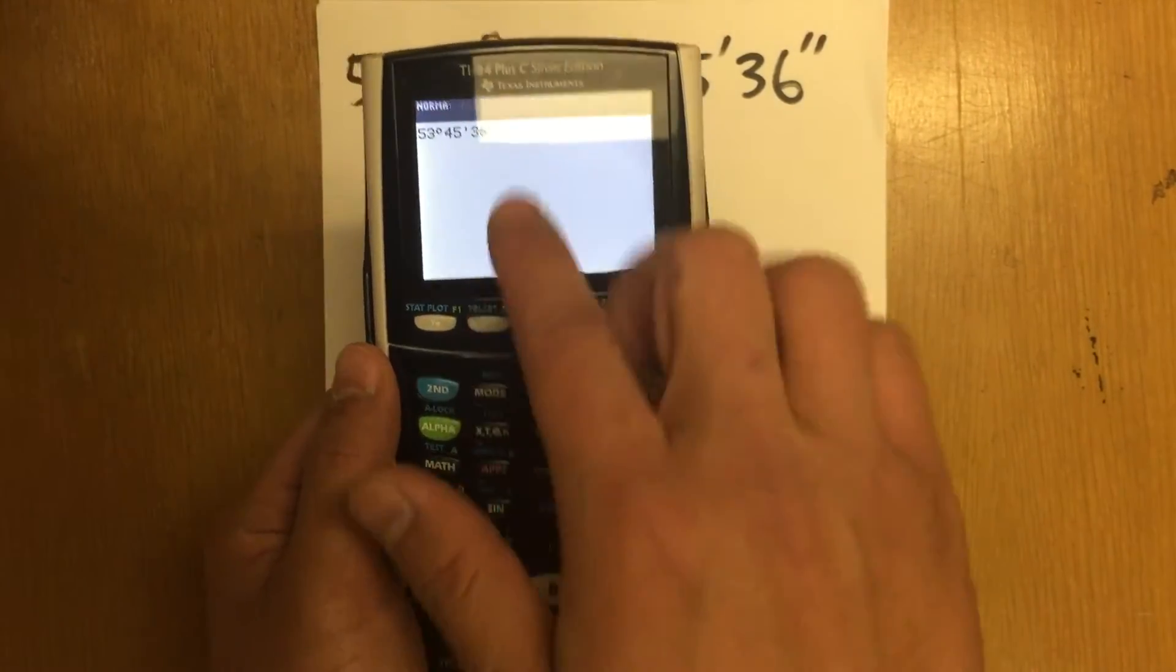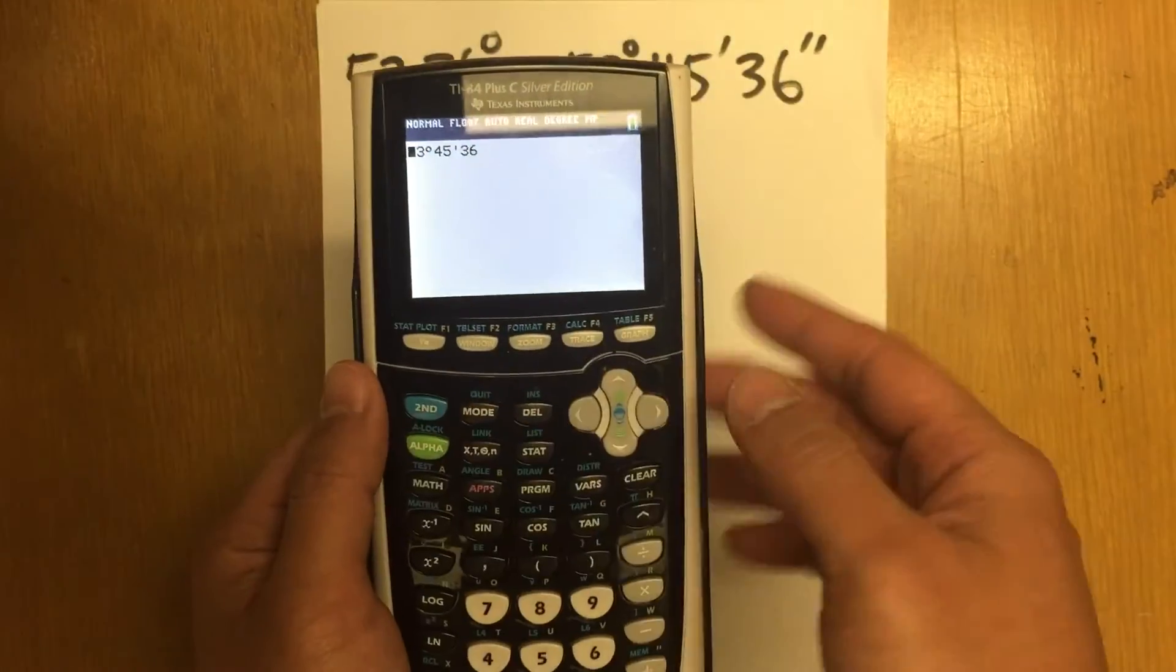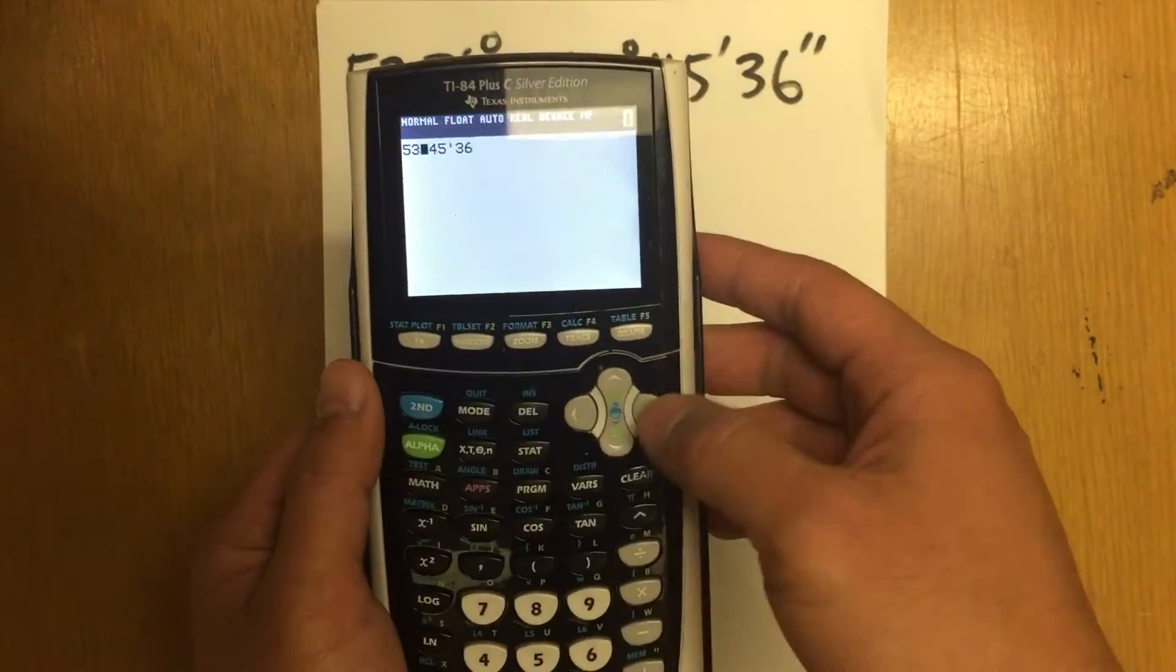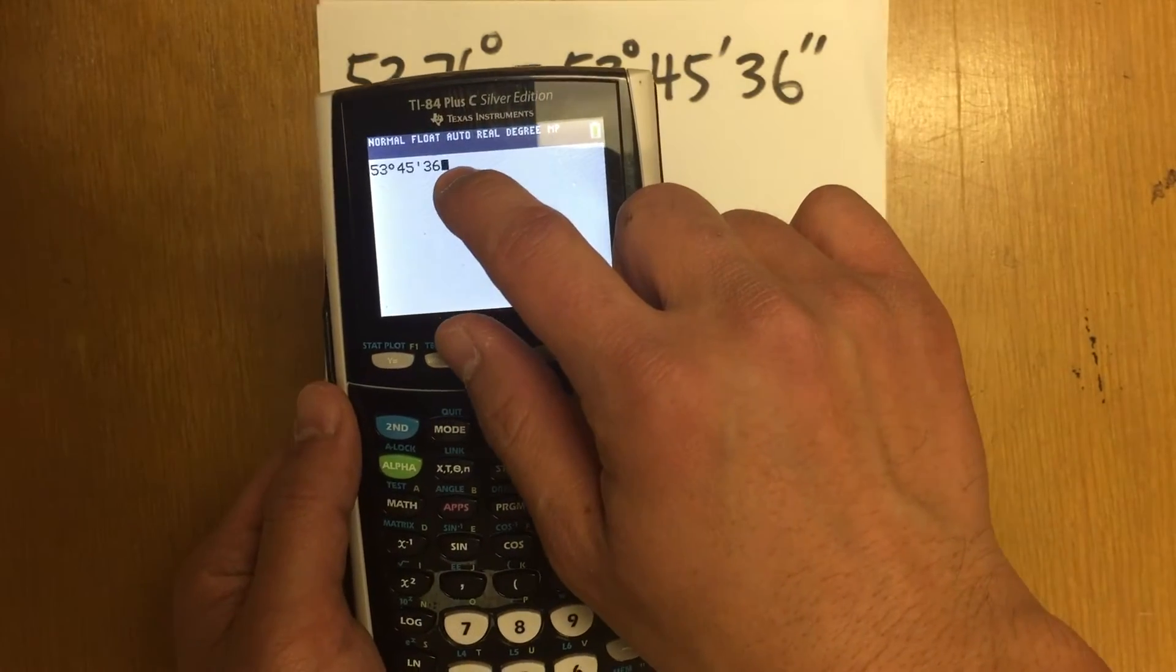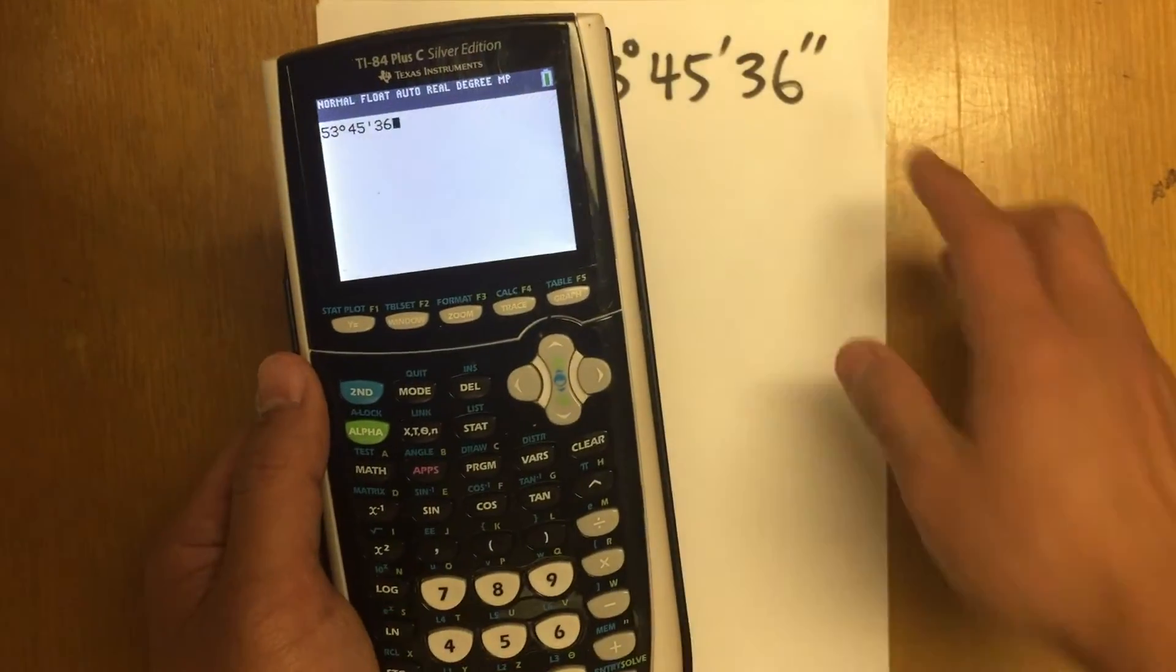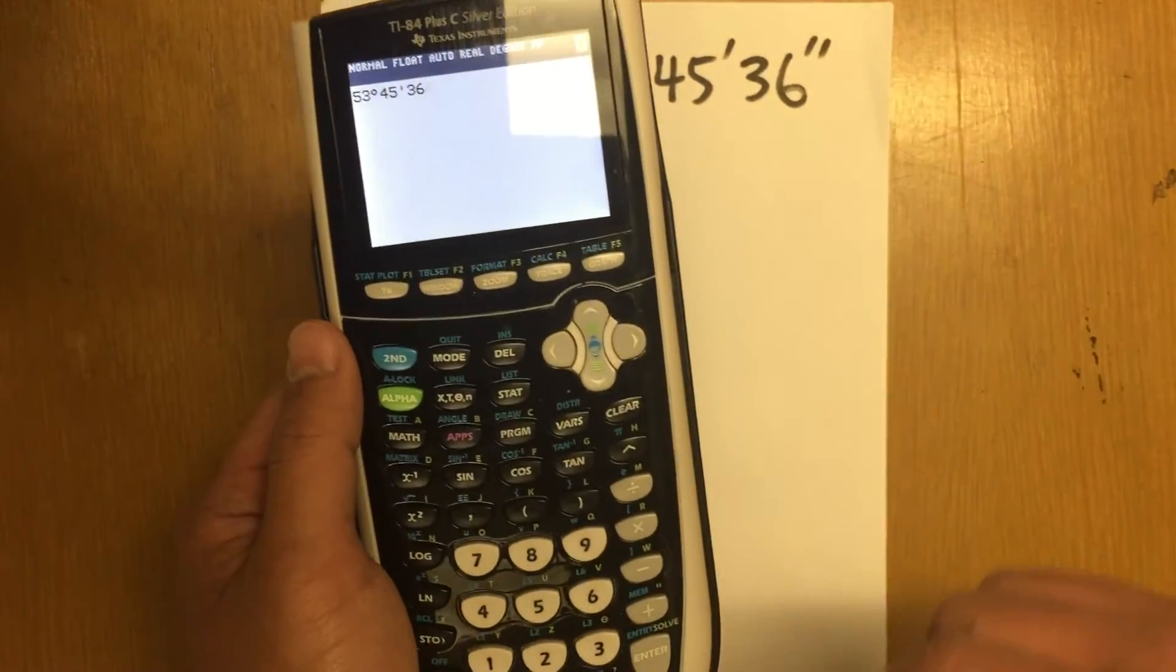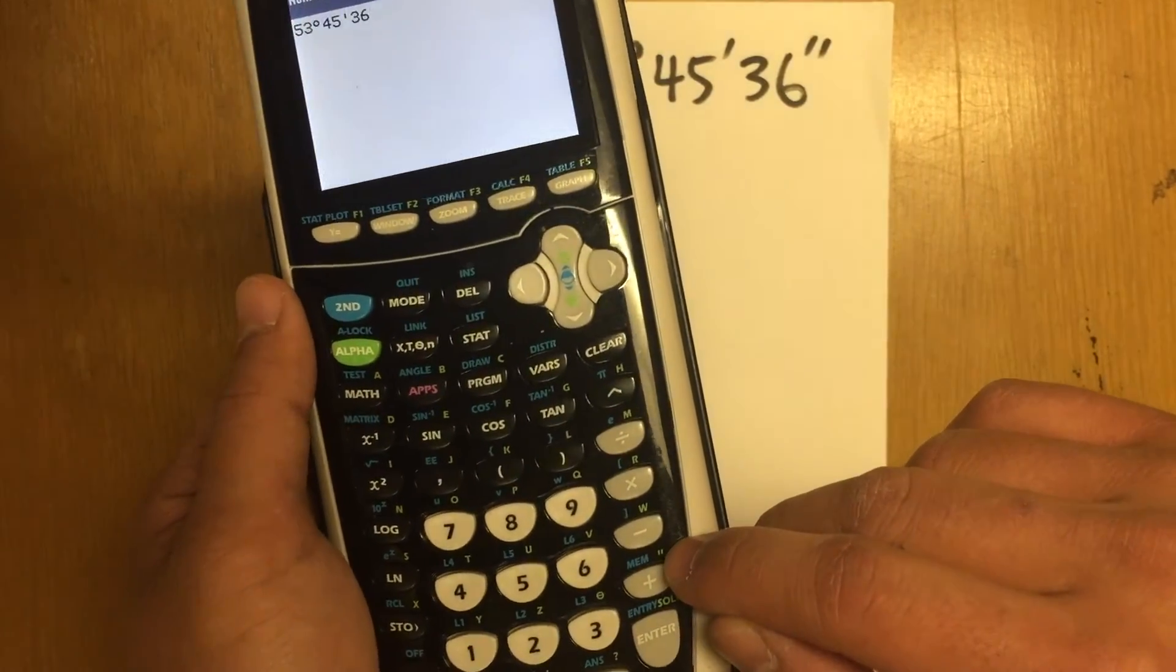So I'm just going to go back to the home menu. And I'm just going to make sure I'm going to enter the second, all the way at the end to the 36. Here is how you are going to find the seconds on the calculator. It's right here.